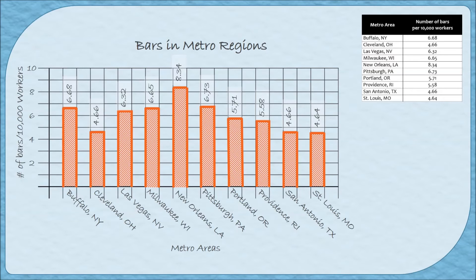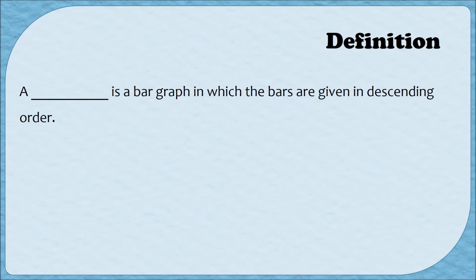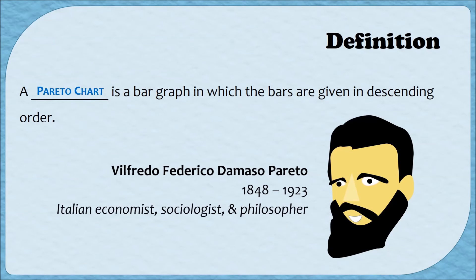When we made the bars for our bar graph we went in order of the cities as they appeared in the table — alphabetical order. Because these values are qualitative, I really could have done the bars in any order. I could have organized them from highest frequency to lowest, or lowest to highest. When you make a bar graph with bars organized from highest to lowest, we call that a Pareto chart. The Pareto chart is named after an Italian economist, sociologist, and philosopher by the name of Vilfredo Pareto, who is most well known for his contributions to economics and the Pareto distribution.